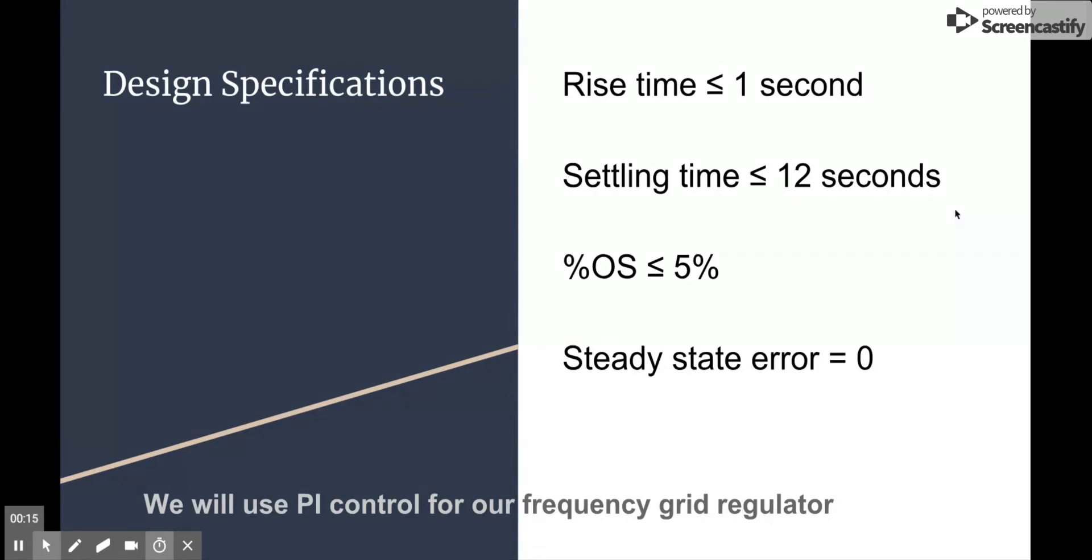With these specifications in mind, our group decided that we were going to shoot for a rise time of less than or equal to one second. We figured that this would mean the system was responding reasonably fast to the input and would lead to less power loss. We also thought it was important for the response to settle fairly quickly, and for this reason we chose a settling time of less than or equal to 12 seconds. Our percent overshoot we decided would be less than or equal to five percent, as we wanted to keep this as small as possible for efficiency reasons. Due to the fact that in power distribution it's very expensive and you don't want extra power loss, we decided that we could have absolutely no steady state error.